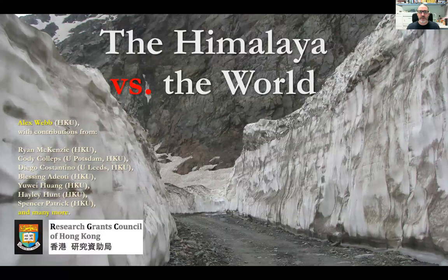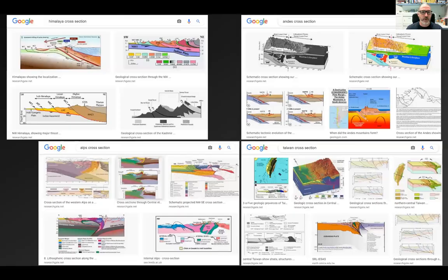Thank you for joining this presentation. The title is a little brash, but this is mainly meant as a review talk with some sense of comparison for how we think of the Himalaya versus other contractional orogenic systems. We Himalayan folks commonly think in cross-section, so we'll start that way. Here I show some Google image search results for the Himalaya, for the Alps, for the Andes, and for Taiwan.